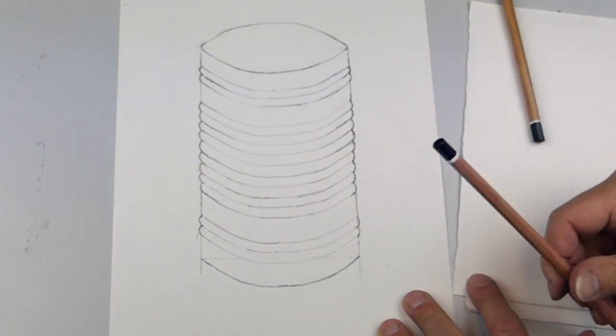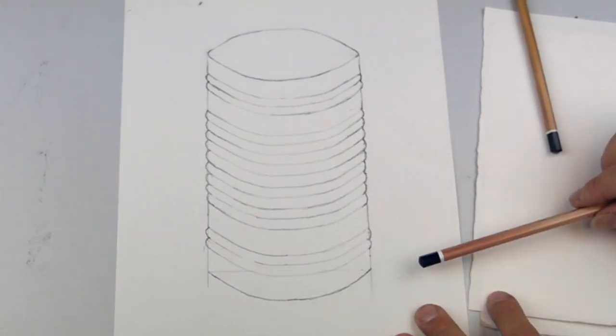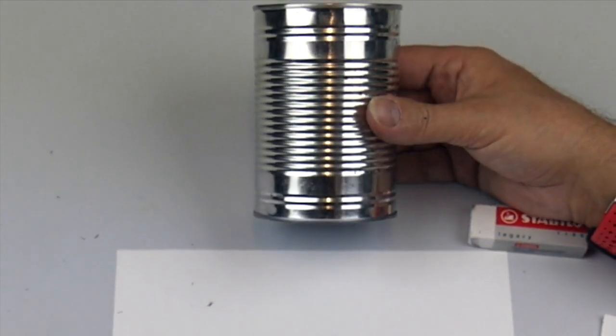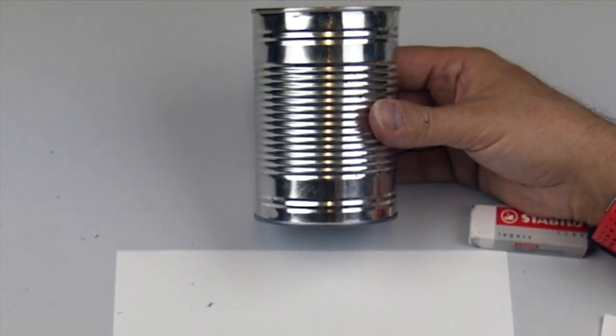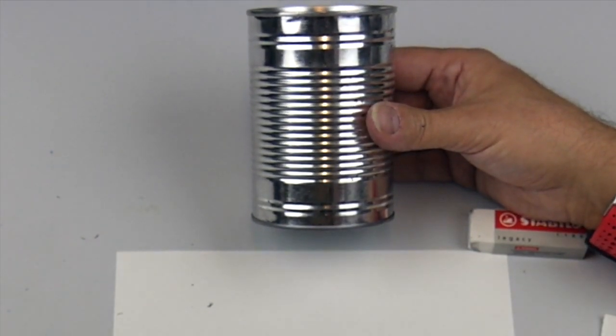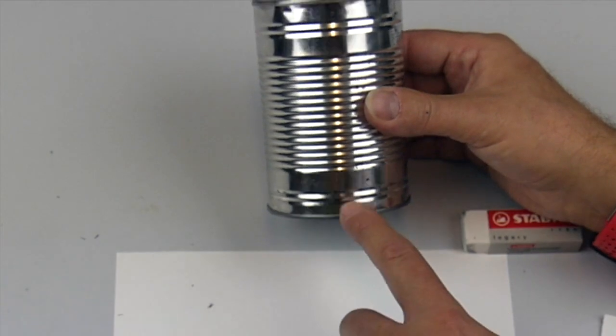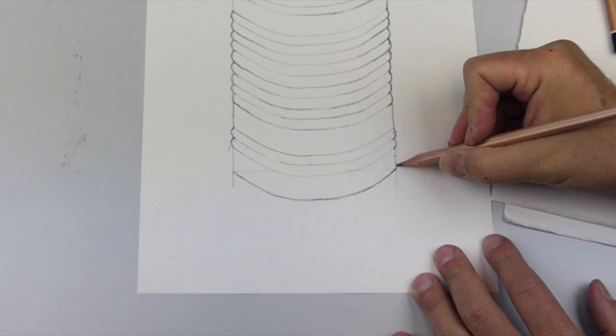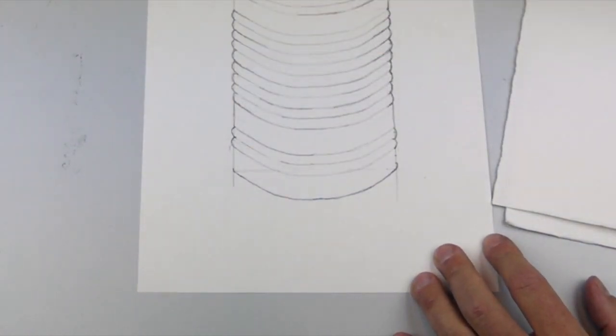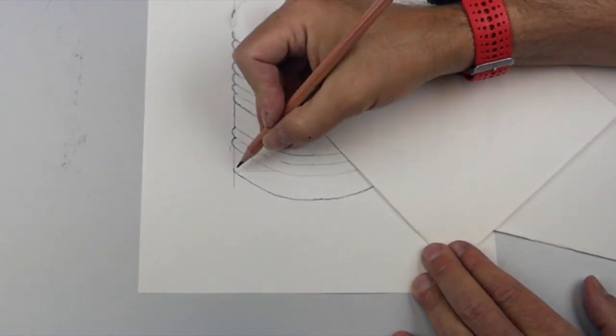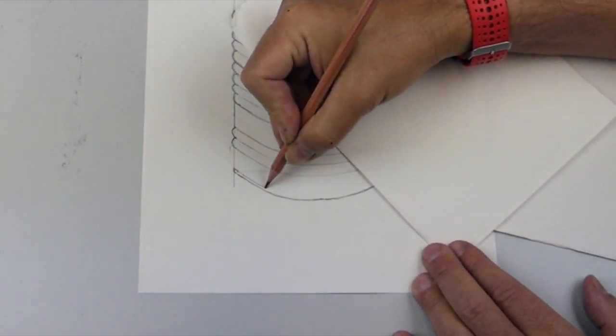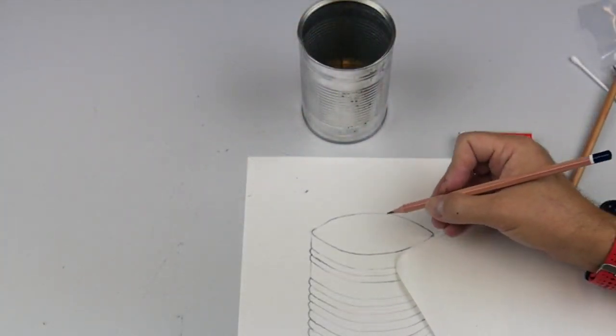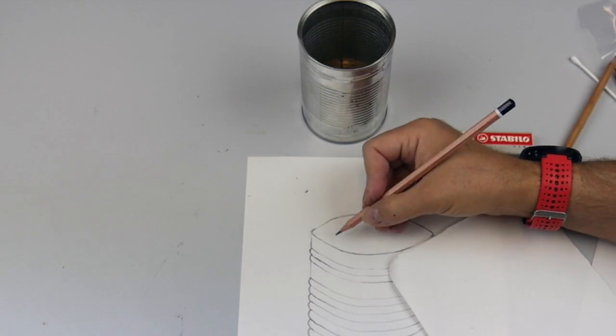Lastly, I'm going to look at the can. I can see a couple of other things which will improve it. This area at the bottom I missed out. I'm looking at it at this angle because the camera is above. I can see I've missed this area and this rim on the inside, so I'm going to pop that in very quickly. I'll use scrap paper to make sure I don't smudge the drawing.